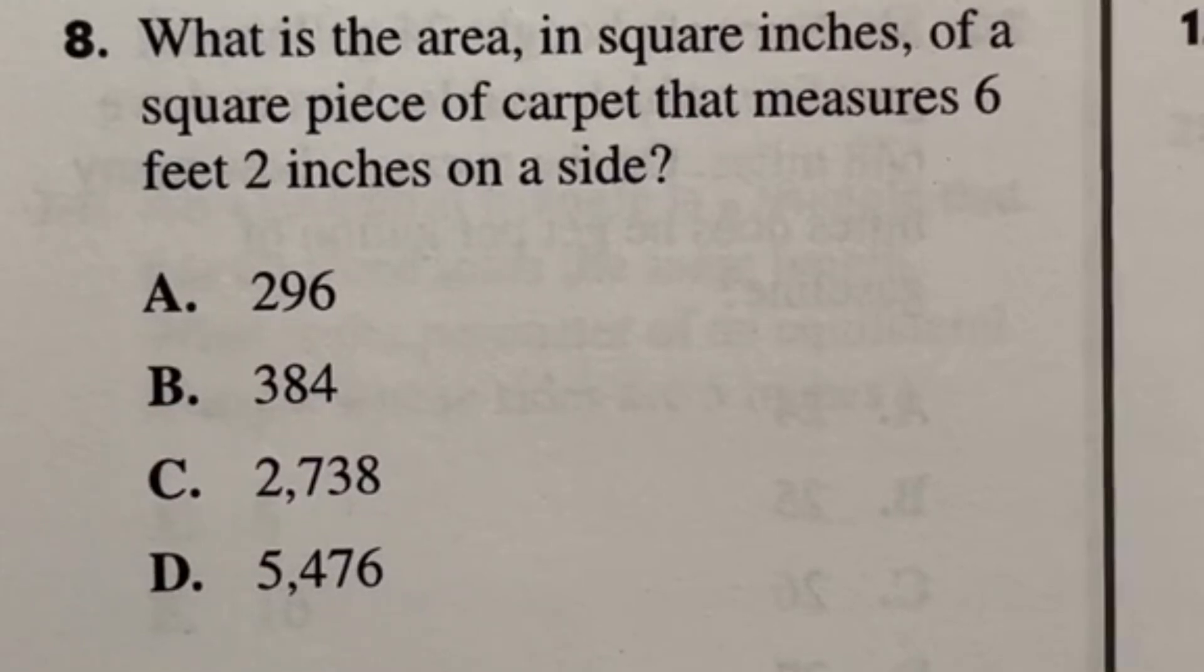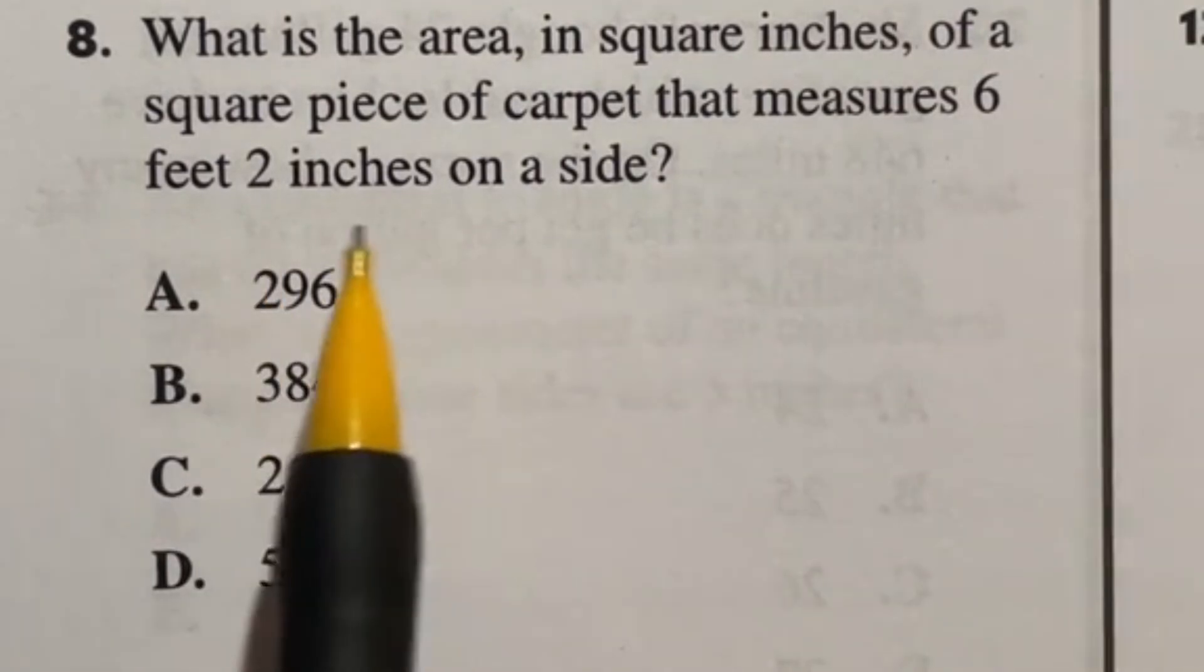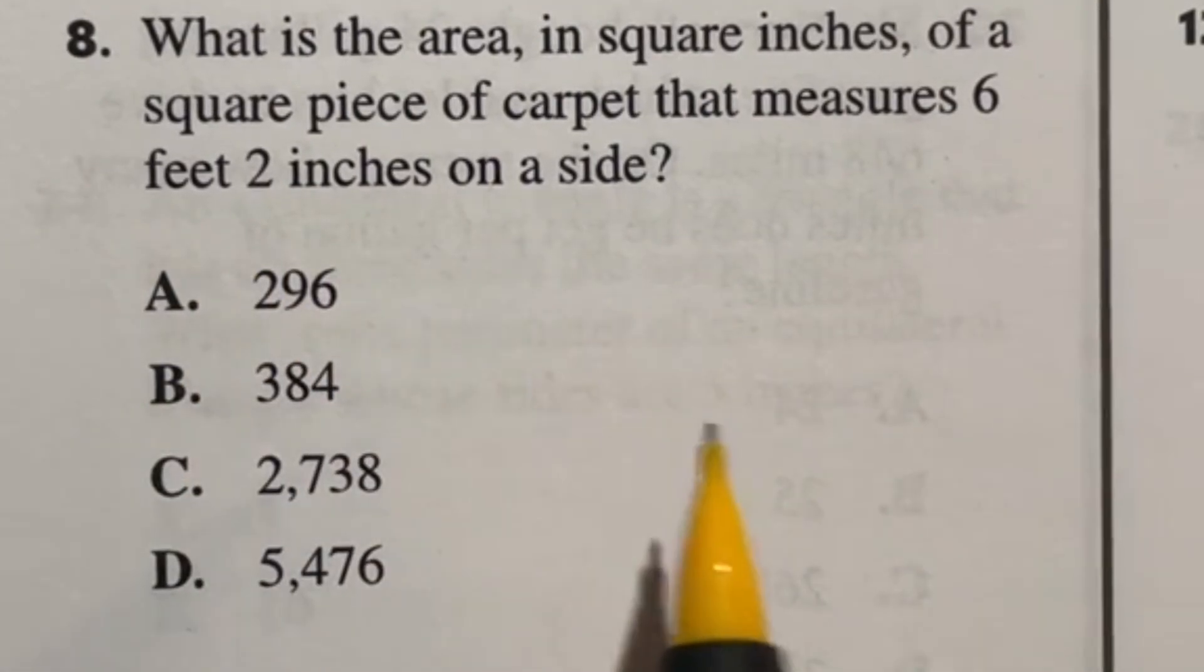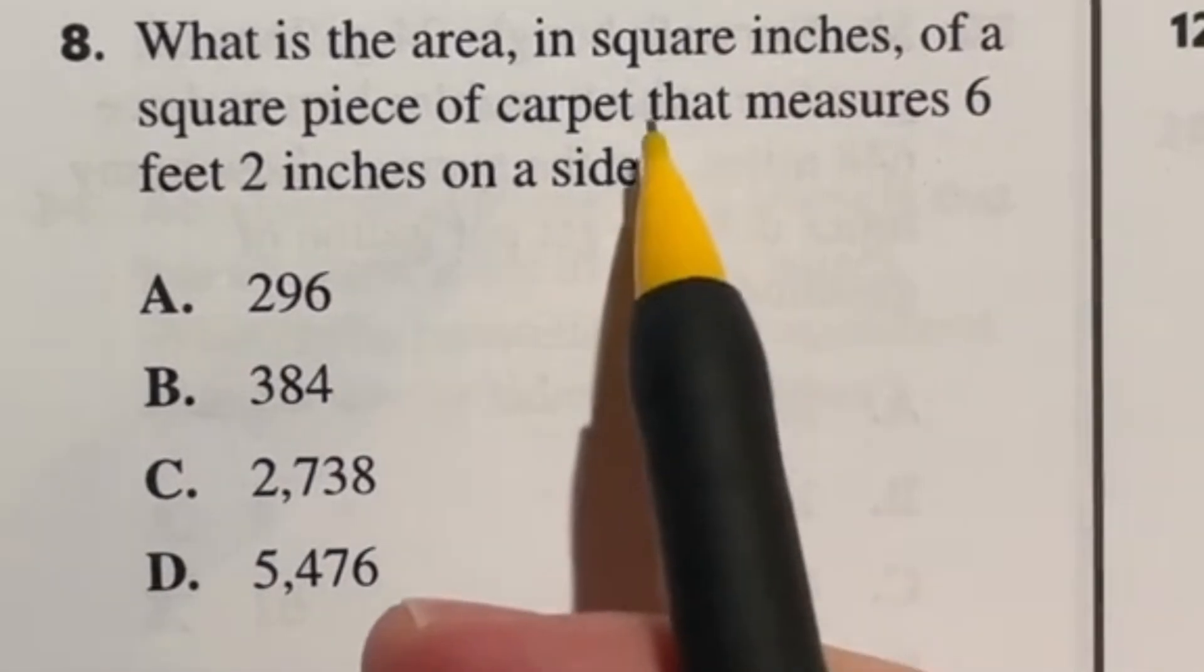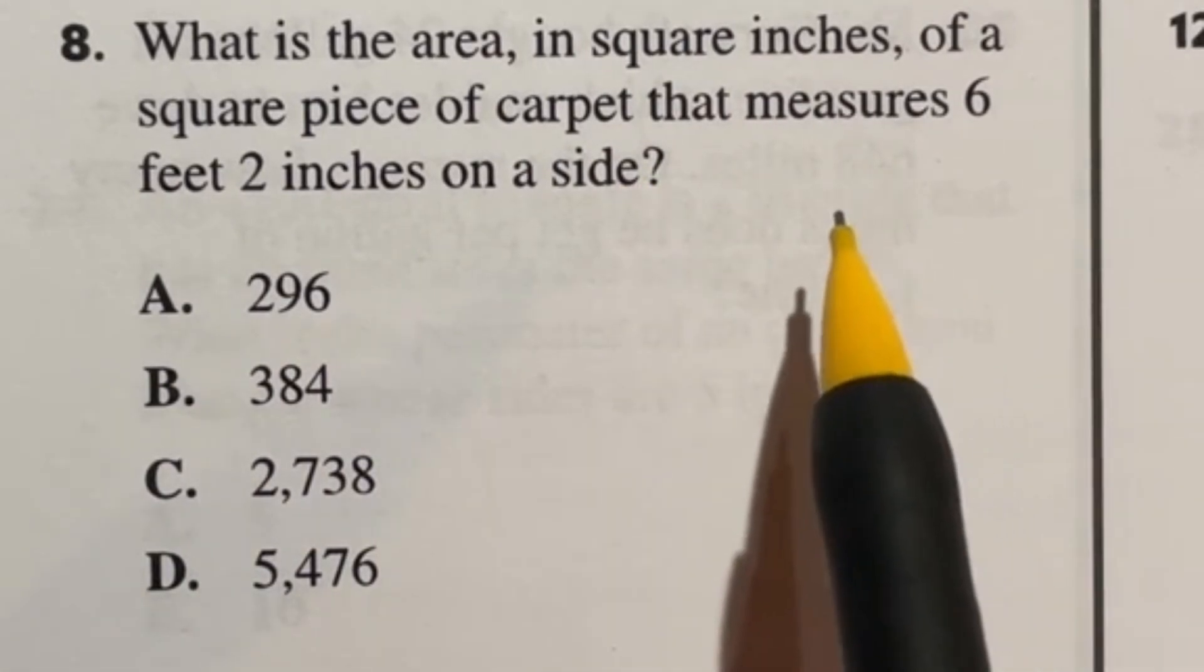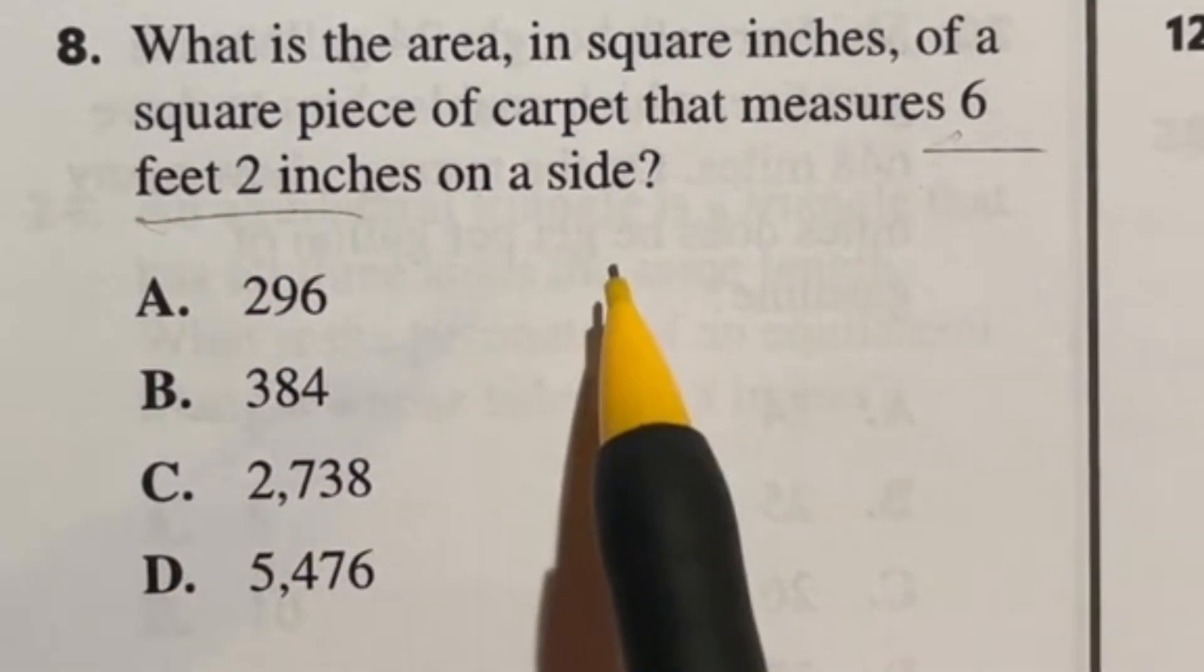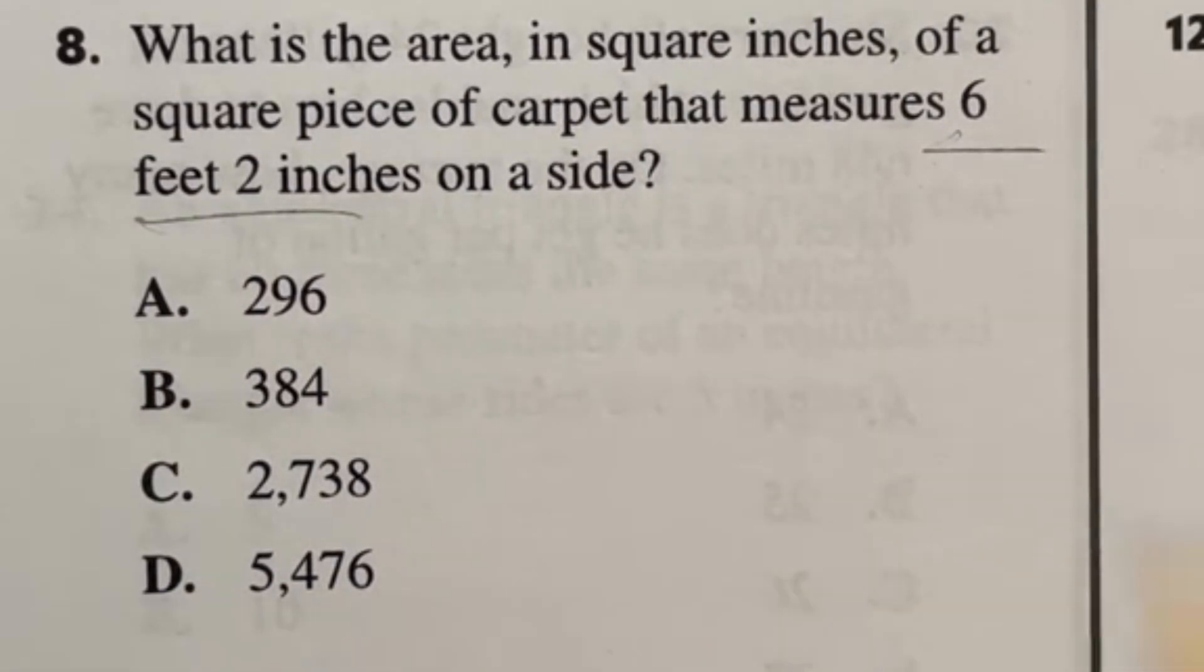Number eight says, what is the area in square inches of a square piece of carpet that measures six feet two inches on a side? Now when you're doing conversions, you have to remember to square these conversions as well. The other way you could deal with this is to just convert all of your measurements first and then do all of your mathematical work and you don't have to worry about squaring conversions.